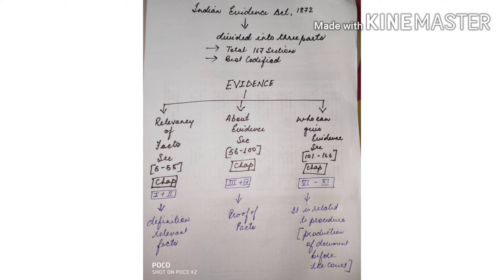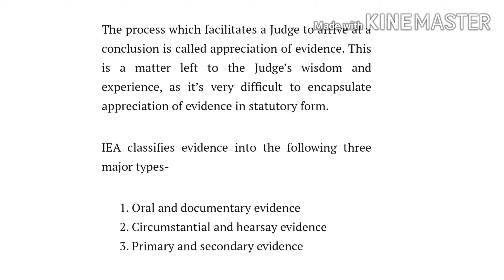Part 1 consists of Chapters 1 and 2 dealing with definitions and relevancy of facts. Part 2 comprises Chapters 3 to 4, which provide for proof of facts by oral or documentary evidence. Part 3 embodies Chapters 6 to 11, which contain rules for the production of evidence in court, the effect of presumption, and the duties of the court in dealing with the evidence produced before it. The process which facilitates a judge to arrive at a conclusion is called appreciation of evidence.